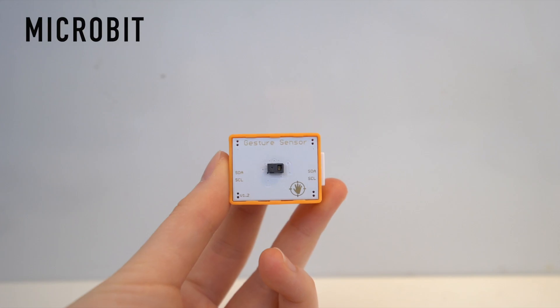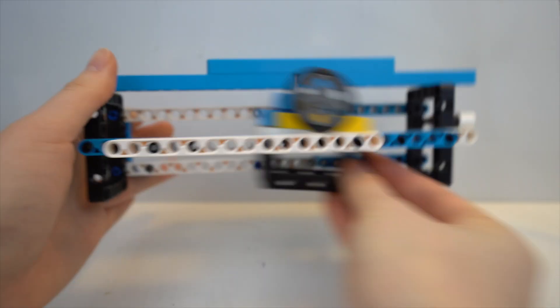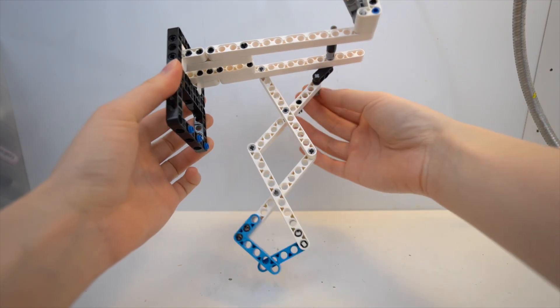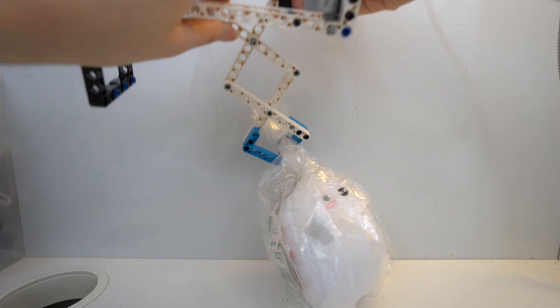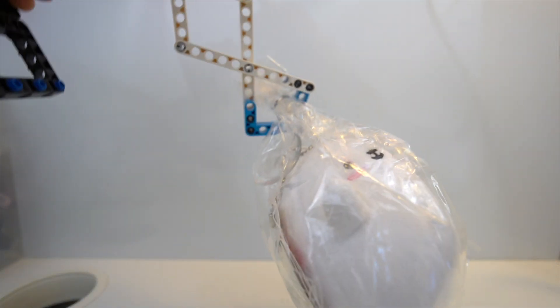I was originally going to make a claw machine for this video and I was going to do this by coding a gesture sensor so it's motion controlled. The code was fairly easy to follow because it comes with these building blocks instead of actual code.